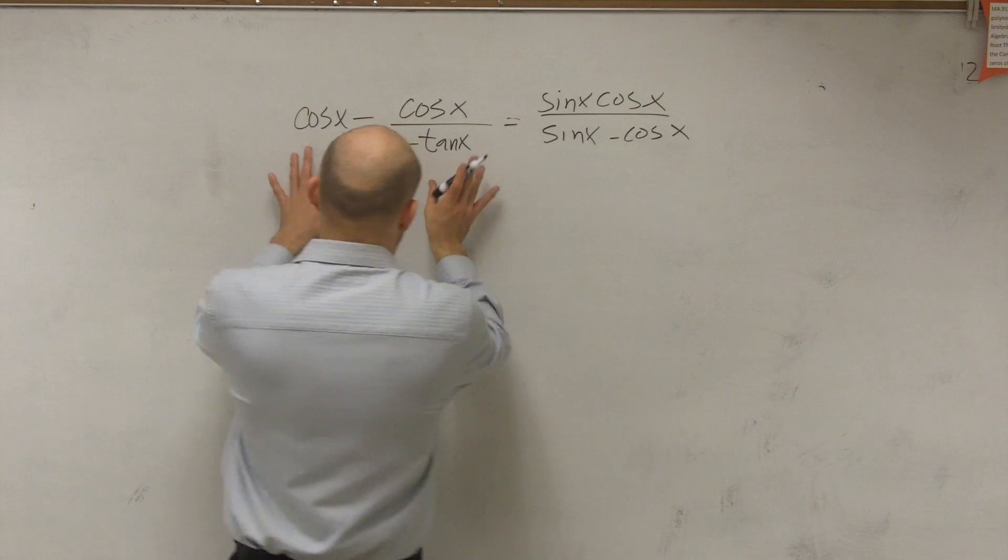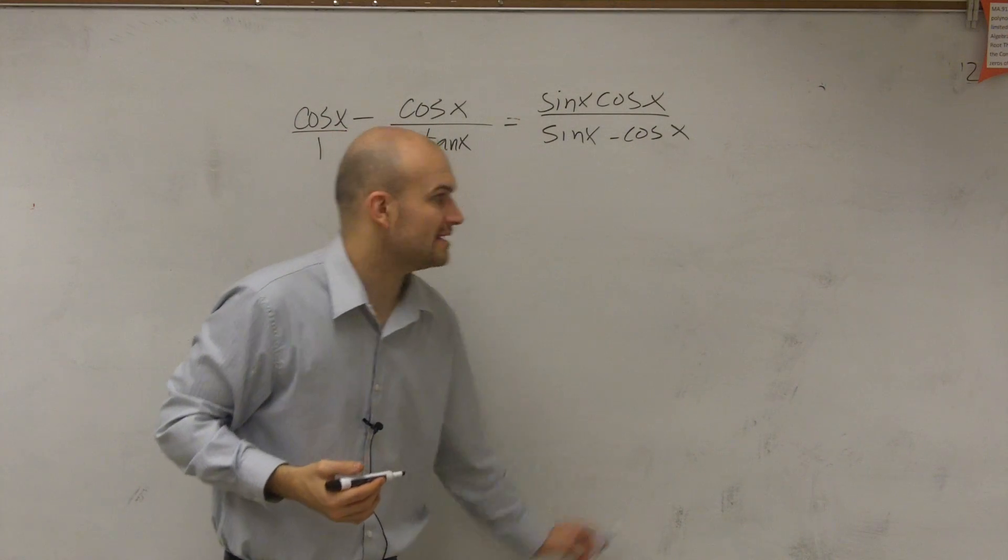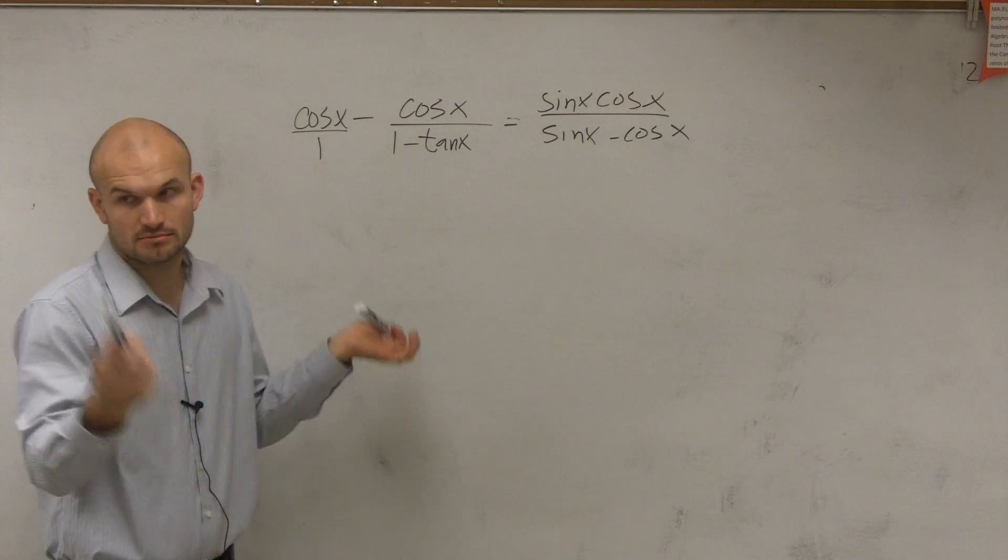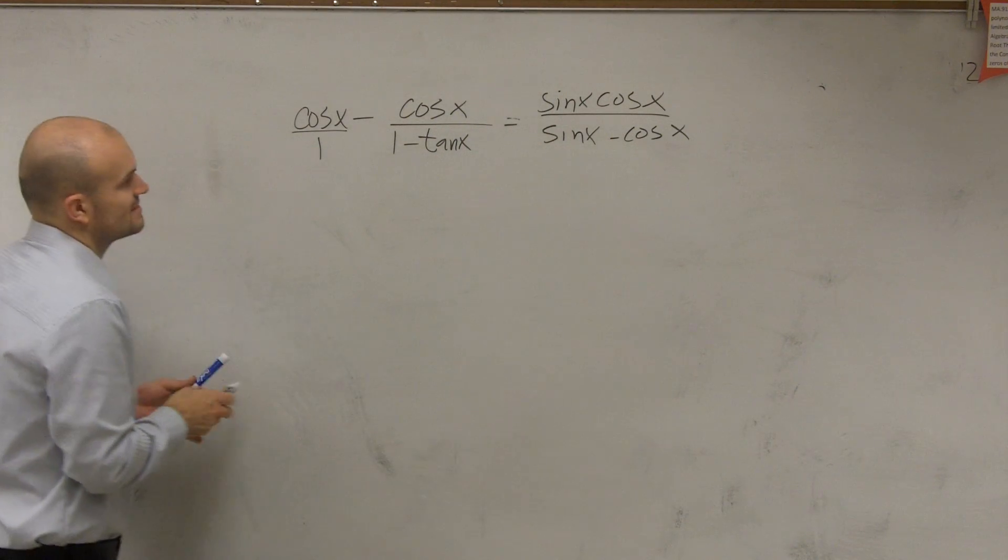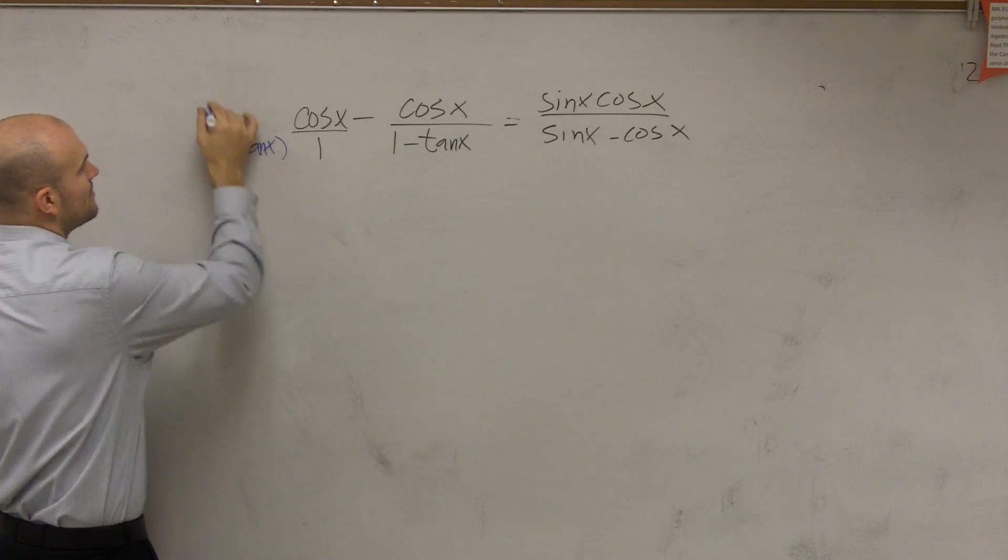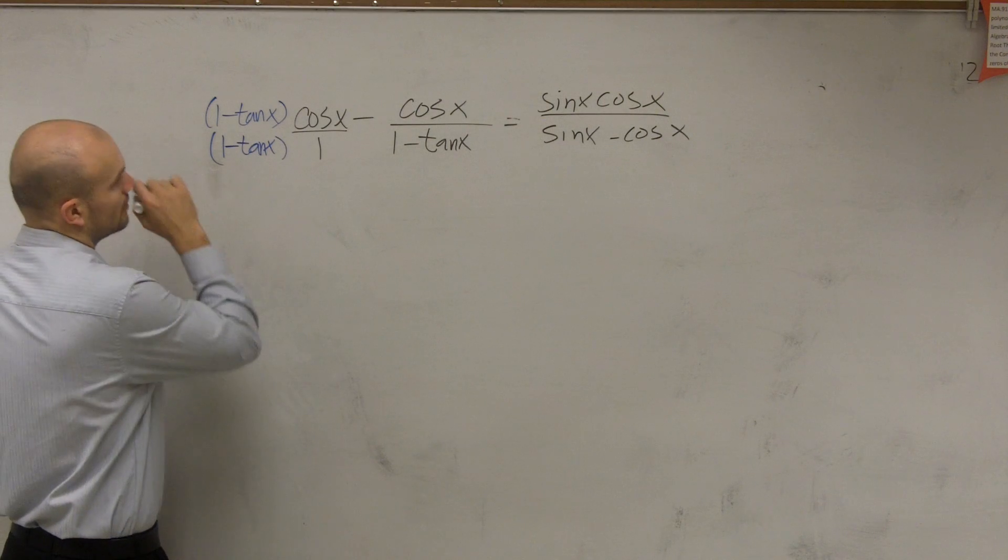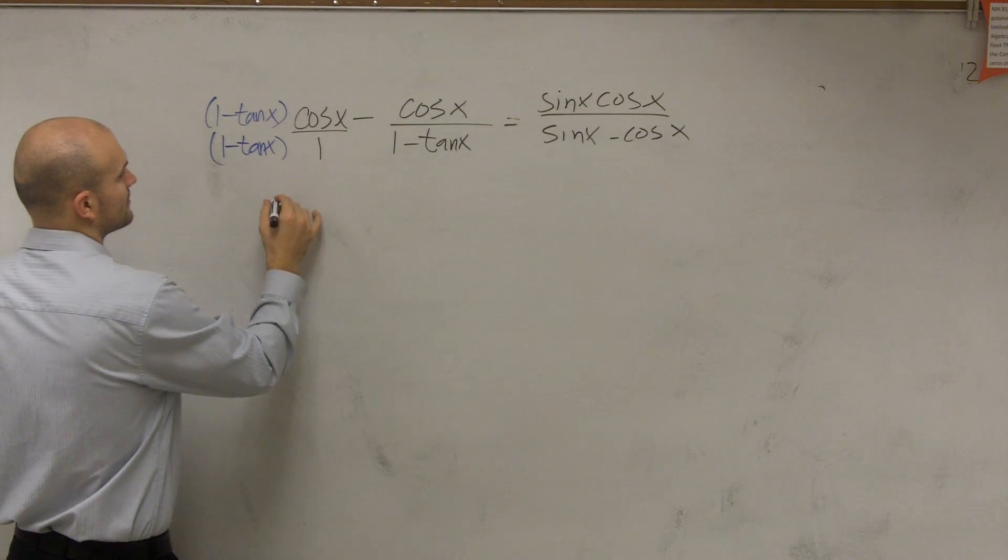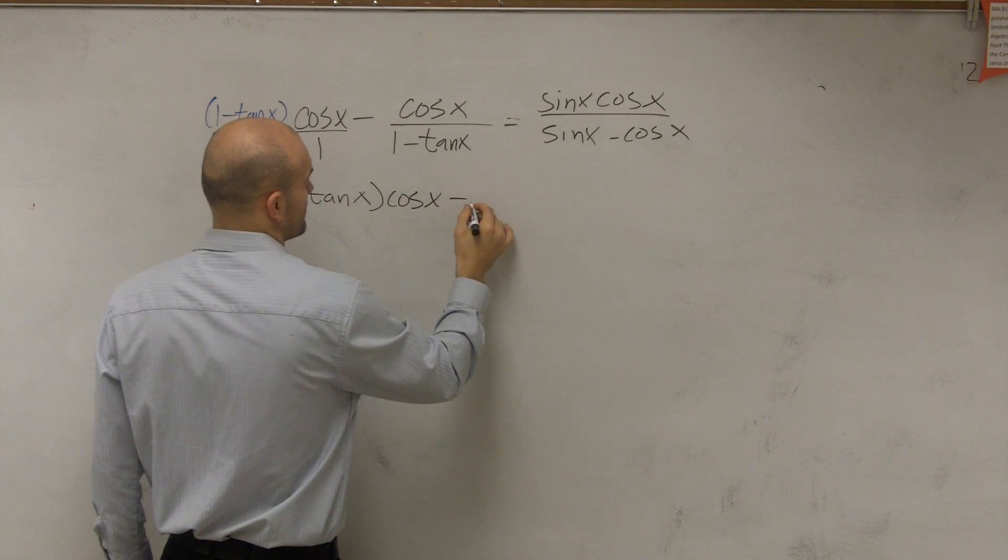So if I was going to work on the left side, I could rewrite this as over one. The next thing is to apply my operations. It's asking me to subtract these two terms. So let's go and subtract. What I'll do to subtract is I need to get the same denominator. So I'm going to multiply by 1 minus tangent of x on the bottom and the top.